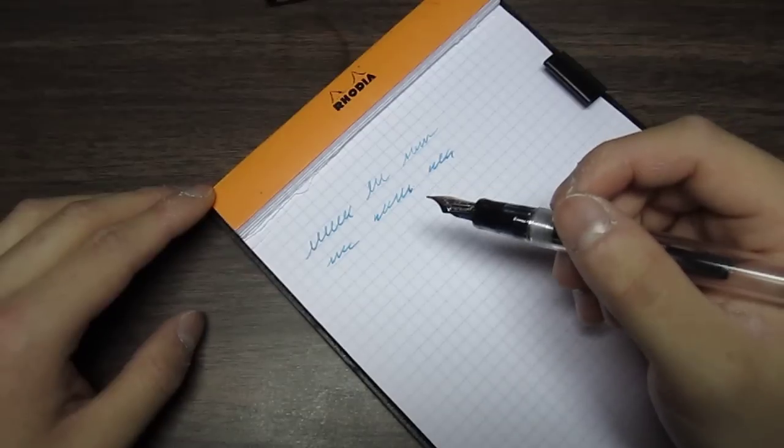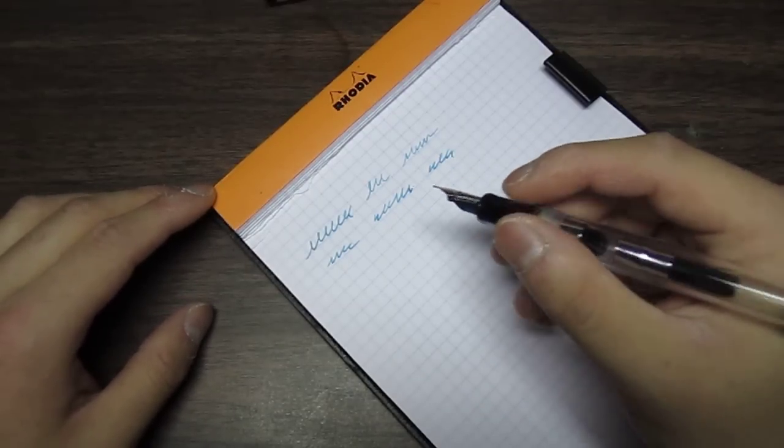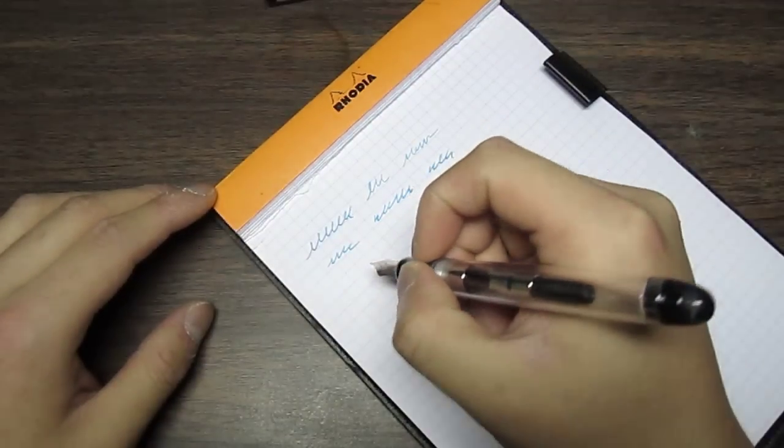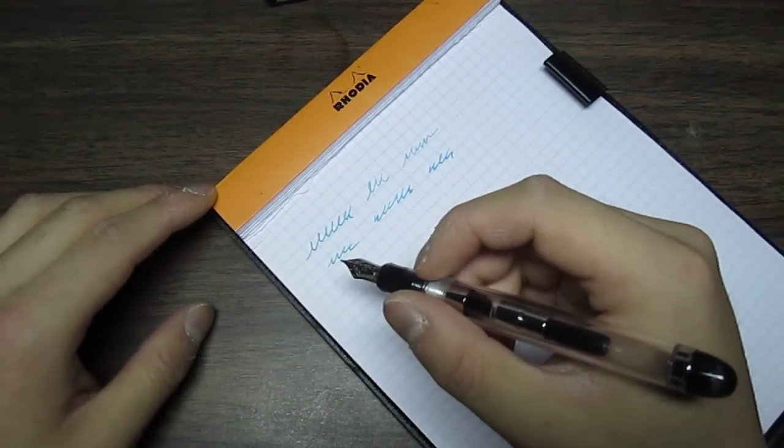Other pens, like the Lamy 2000, the sweet spot is actually very small. It's very sensitive to what kind of pen angle you're holding it at, as well as how you align the nib.